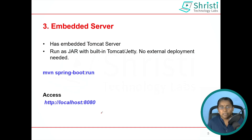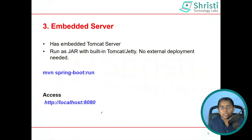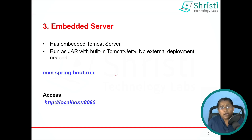The next feature is the embedded server. The moment you add Spring Web as a dependency, an embedded Tomcat server is automatically added to your application. You don't have to deploy your API as a WAR file — you can create it as a JAR application and run it with 'java -jar your-jar-file-name', or using Maven with 'mvn spring-boot:run'. You can access it from the browser at localhost:8080, which is the default port number.